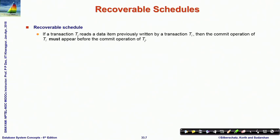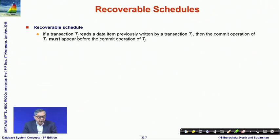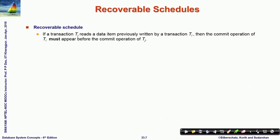We define a schedule to be recoverable as follows: if a transaction Tj reads data previously written by transaction Ti, then the commit operation of Ti must appear before the commit operation of Tj. The earlier transaction that wrote the data must commit before the later transaction reads it. If that happens, the schedule is a recoverable schedule.